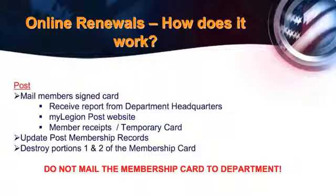The temporary card just says 'renewed online' but it's just as good as any other card. But if the member wants that other card, he just brings you the receipt or you go online and verify that he renewed online and give him his card. For post adjutants, you simply give him his member card. You take portions one and two and you destroy them — do not send them in. Shred it, burn it, rip it up, but destroy it.